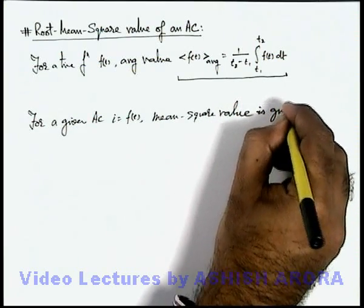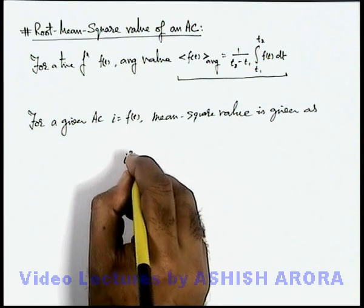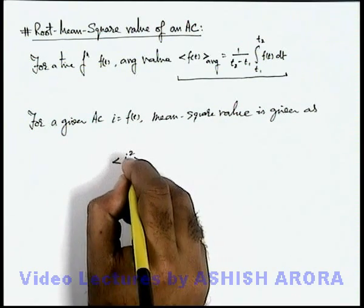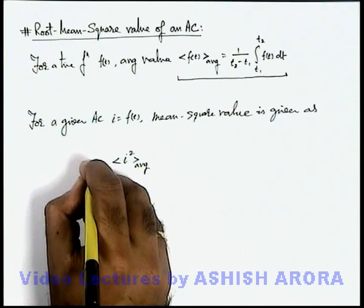Mean square value is given as - if we calculate the mean square value, it is the average of i square. This is termed as IMS.